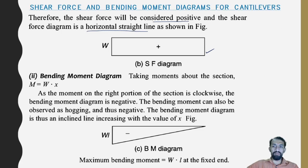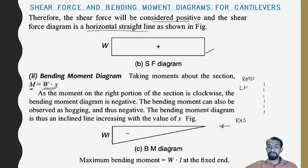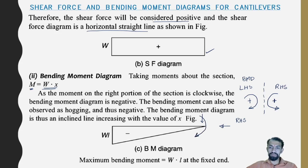For the bending moment diagram, taking moments about the section: M = W × x. Moving from the right-hand side, applying sign convention for BMD — left-hand side clockwise is positive; right-hand side anticlockwise is positive. The load W acting from the right-hand side tries to rotate the beam in the clockwise direction on the right-hand side, which is negative.